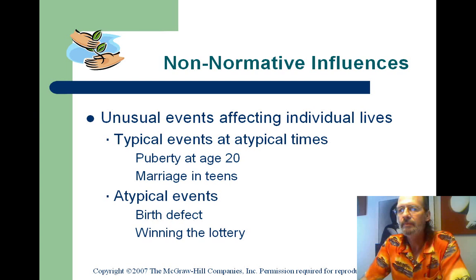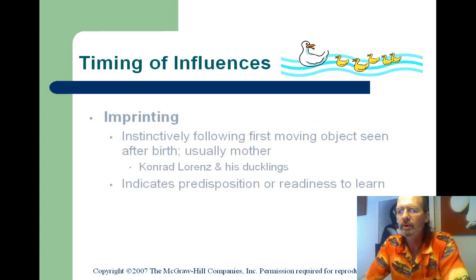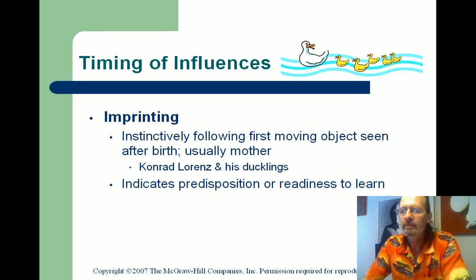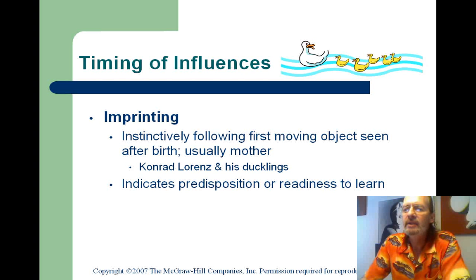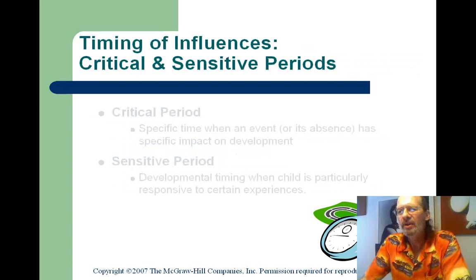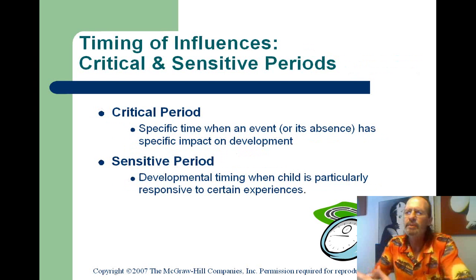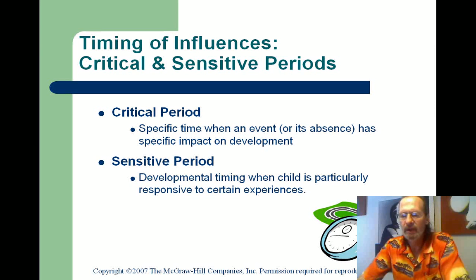Timing of influences seems to be really important. Imprinting is what happens with some of the lower animals — there's an interesting video on YouTube of a duckling that imprinted with a puppy. This indicates predisposition or readiness to learn. A critical period is a specific time when an event or its absence has specific impact on development. Victor kind of led some scientists to think there may be a critical period when language had to be learned, or it wasn't learned at all.